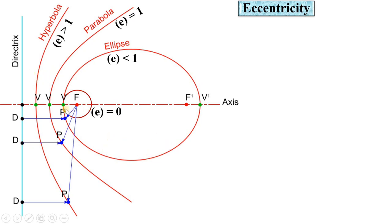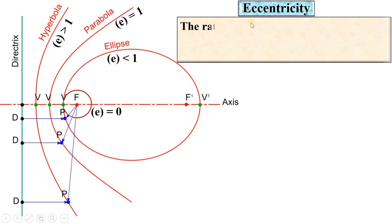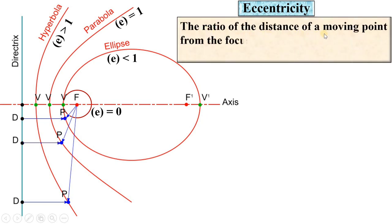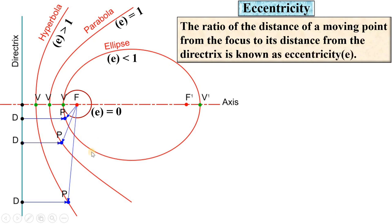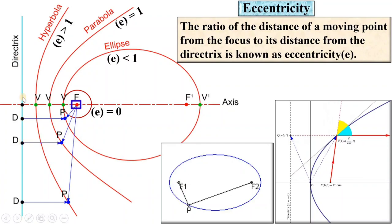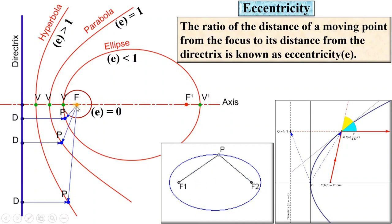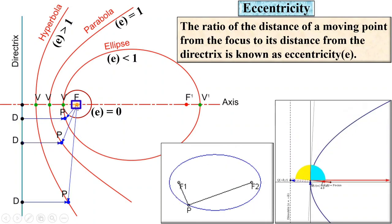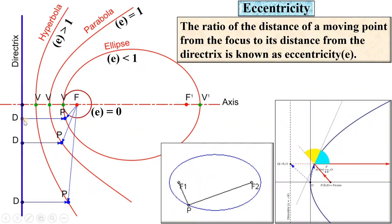Here is a comparison of three different engineering curves in one figure. Try to understand the concept of eccentricity. Eccentricity is the ratio of the distance of a moving point from the focus point to its distance from the directrix. The focus point is a fixed point and the directrix is a fixed line.